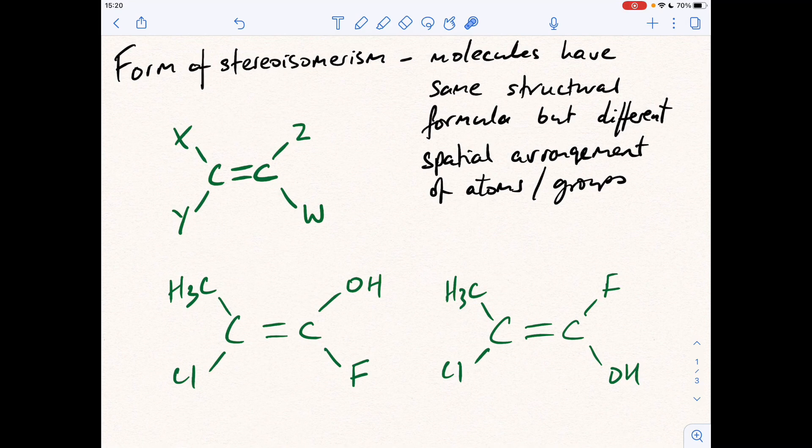So how do you work out which one's which? Well, we employ the CIP rules, the Cahn-Ingold-Prelog priority rules. And we establish priority by looking at the atomic number of the atom that's directly attached to the carbons of the double bond.